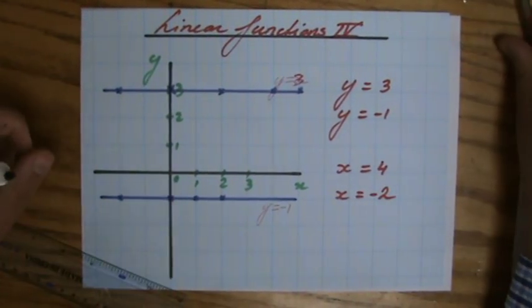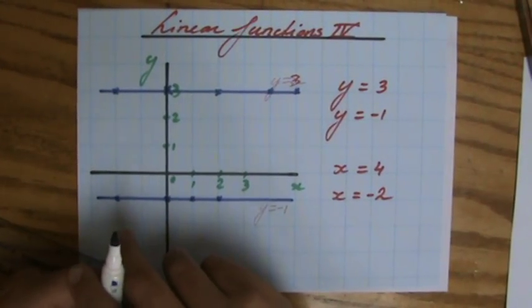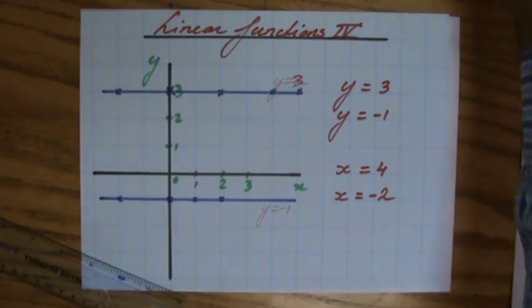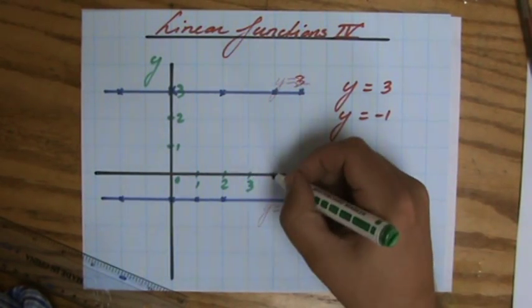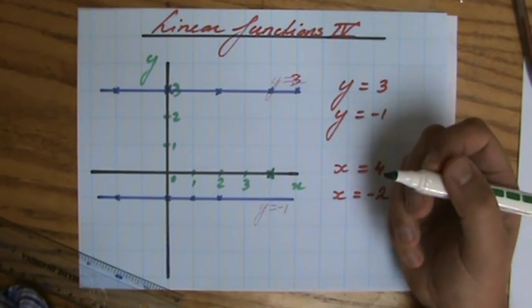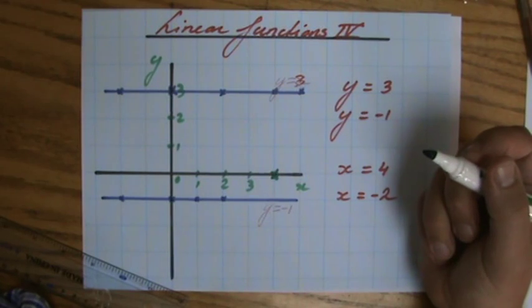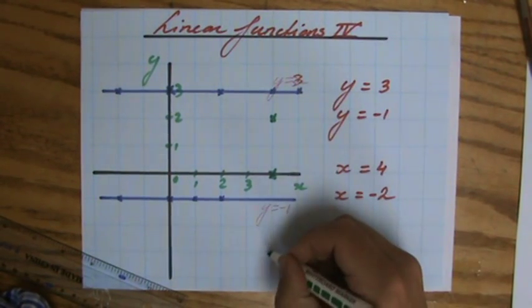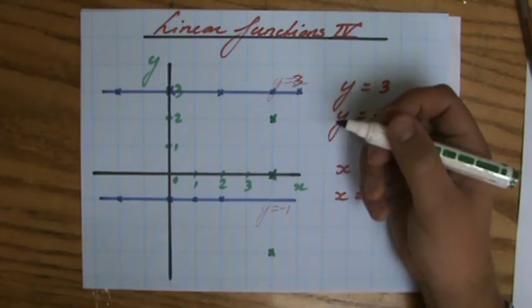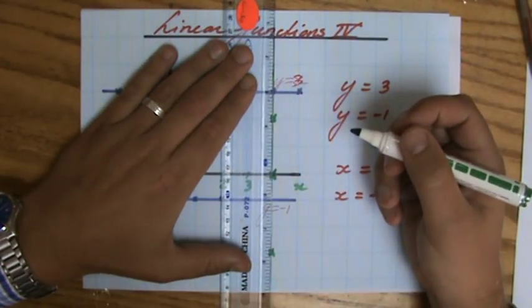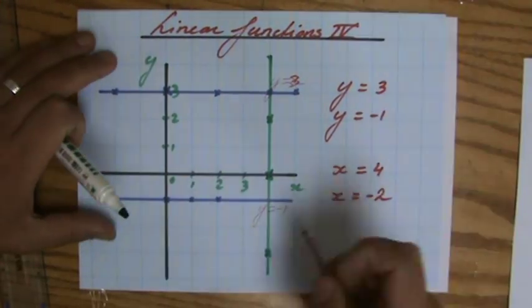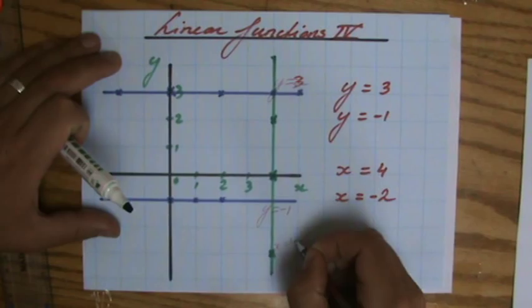Moving on to the next ones now, x equals 4. x can only be 4. So what do you think, where is x 4? x is 4, for instance, over here. But where else is x 4? x is 4 here, x is 4 over there. So the line x equals 4 is a vertical line where x is 4.